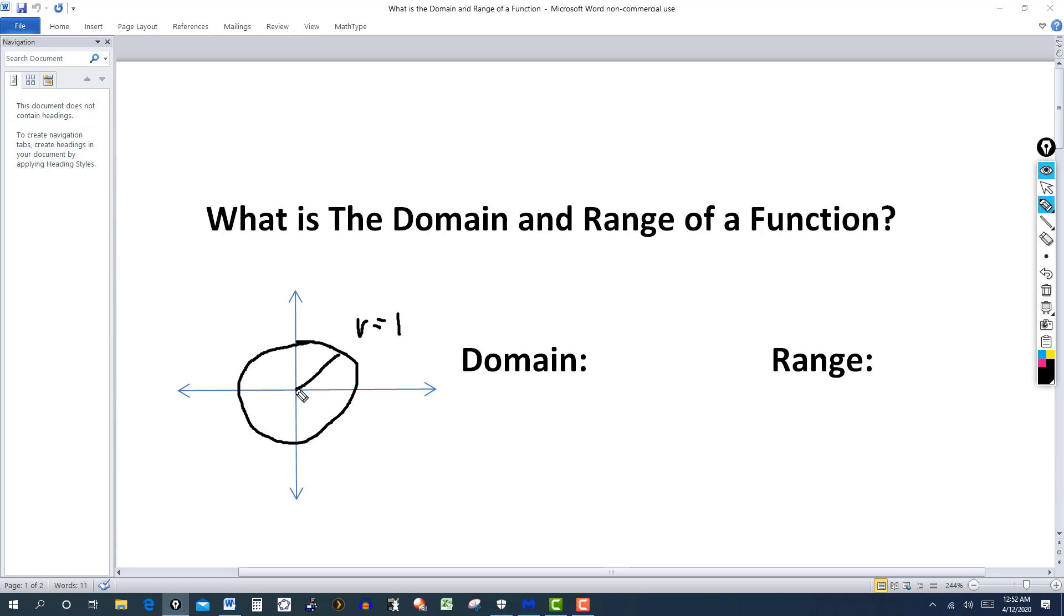So you can see that when x has a value of zero here, this is the x-axis, this is the y-axis. So when x has a value of zero, the y value to that particular point can be one or down here negative one. So there's for that particular value of x, there's two values of y. So this is not a function.